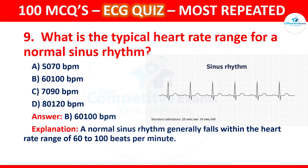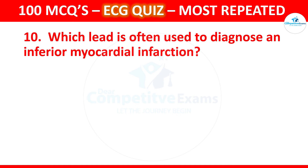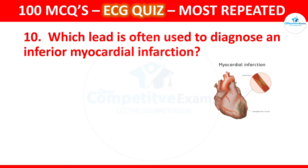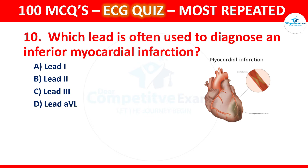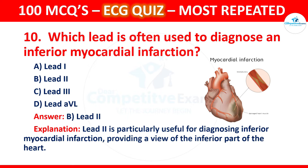Question 10: Which lead is often used to diagnose an inferior myocardial infarction? Options are Lead 1, Lead 2, Lead 3, and Lead AVL. The correct answer is Lead 2. Lead 2 is particularly useful for diagnosing inferior myocardial infarction, providing a view of the inferior part of the heart.